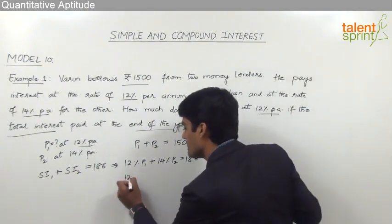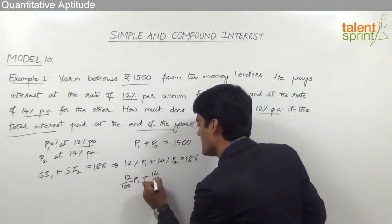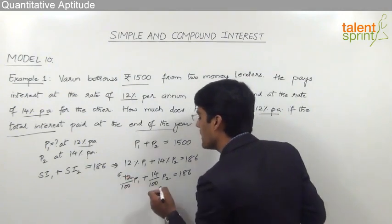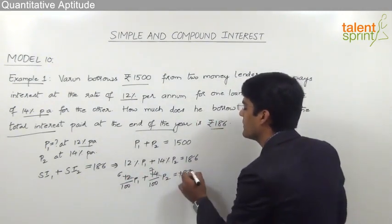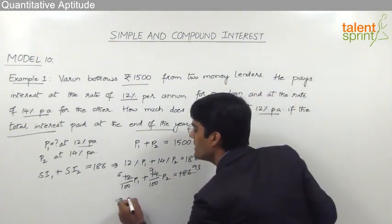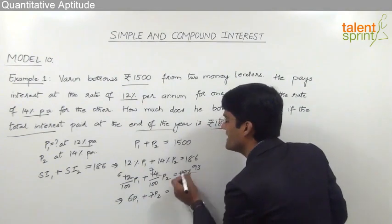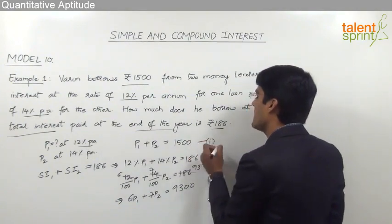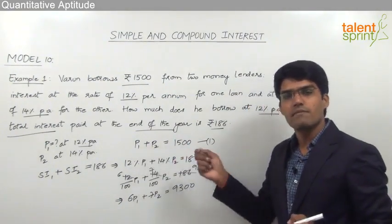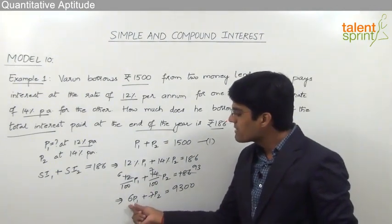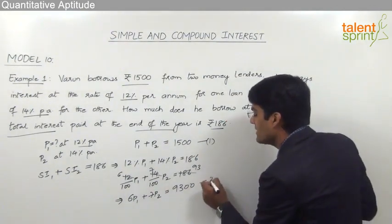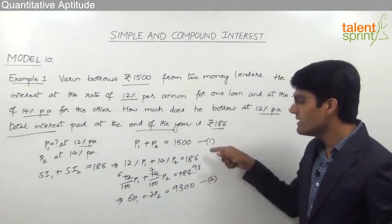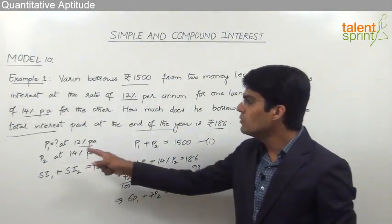This can be written as (12/100)P1 + (14/100)P2 = 186. Taking 2 as common, we get (6P1 + 7P2)/100 = 93, which gives us 6P1 + 7P2 = 9300. So we now have two equations: equation 1 is P1 + P2 = 1500, and equation 2 is 6P1 + 7P2 = 9300. Two equations with two variables — P1 and P2 — can be solved to find P1.